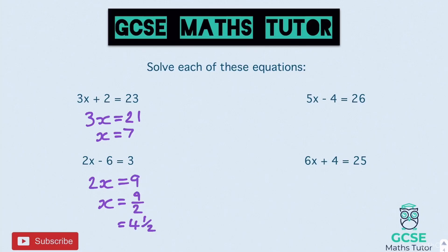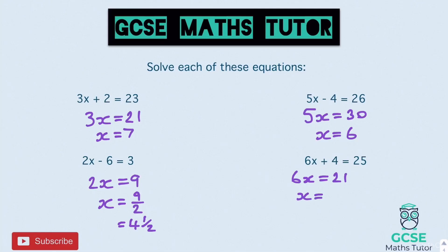For the third question: add 4 to both sides, giving 5x equals 30, then divide by 5 to get x equals 6. For the last question: subtract 4 from both sides, giving 6x equals 21. Dividing by 6 gives x equals 21 over 6. We simplify by dividing top and bottom by 3 to get 7 over 2, which is 3 and a half or 3.5.